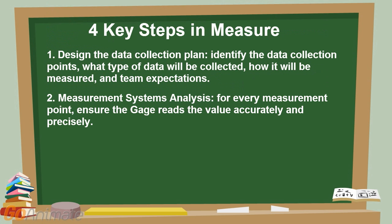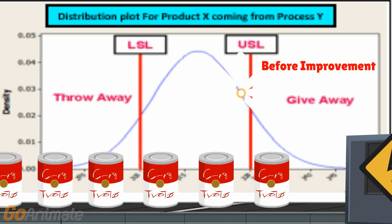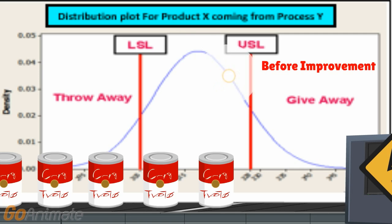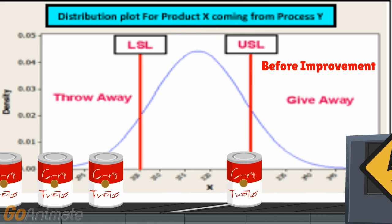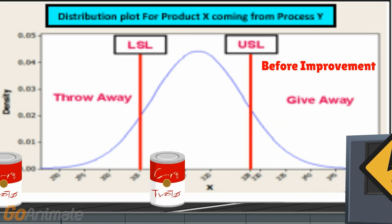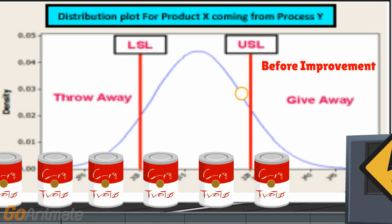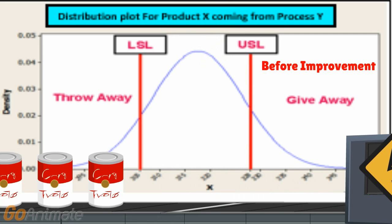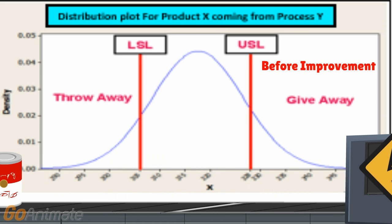Step 2 — Measurement Systems Analysis. For every measurement point, ensure the gauge reads the value accurately and precisely. For instance, a common gauge in process capability studies is a checkweigher. The checkweigher must be both precise and reliable. Prior to starting a process capability study, verify the checkweigher is not contributing significant weight variation between cup to cup by performing an MSA.